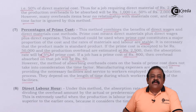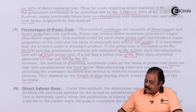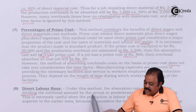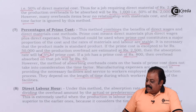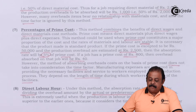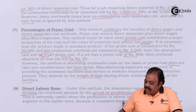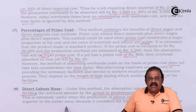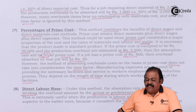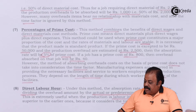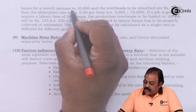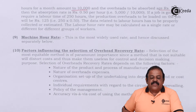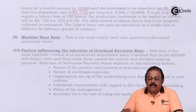Direct labor hour method: under this method, the absorption rate is calculated by dividing the overhead amount by the actual or predetermined direct labor hours. This is extremely useful when production is labor-intensive and is superior to earlier methods because it considers the time factor. If direct labor hours for a month amount to 10,000 and overheads to be absorbed are Rs. 5,000, the absorption rate is 50 paise (Rs. 0.50) per hour.